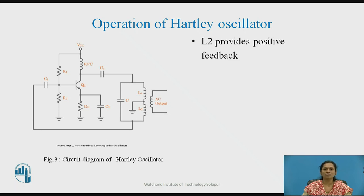AC output oscillations are observed at the secondary winding of the inductor. L2 provides the positive feedback, which sustains oscillations because the amplifier provides a 180-degree phase shift of the input signal, and the same 180-degree phase shift is provided through the tank circuit. The total phase shift is therefore 360 degrees, which is in phase with the input signal, so L2 provides positive feedback.